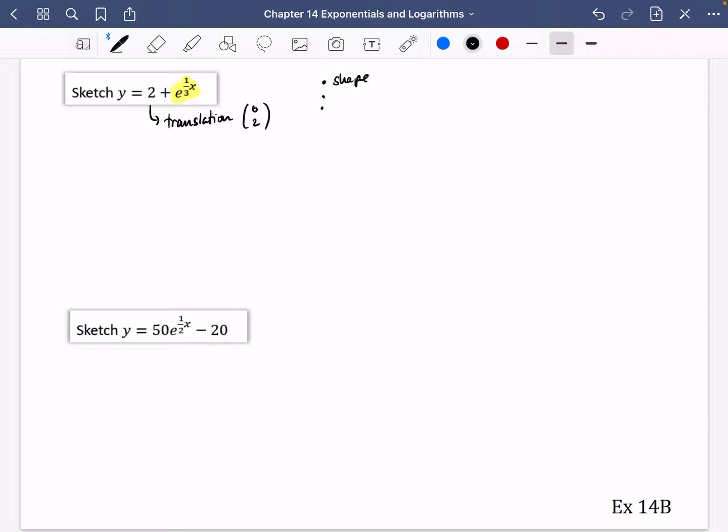So we're going to do our three things that we've got. We've got your shape, we've got the y-intercept, and we've got the asymptote. So it's an e to the x graph. Generally, it's going to be this kind of shape. The y-intercept is going to be when x equals 0, y is going to be equal to 2 plus e to the 0, which is 1. So it's 3.